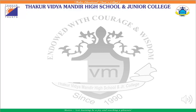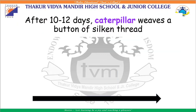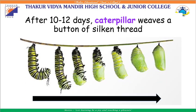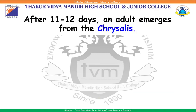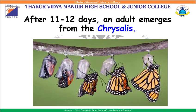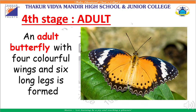Now comes the third stage, and that is the pupa. After ten to twelve days, the caterpillar weaves a button of silken thread and forms a covering called chrysalis or pupa. Growth of the butterfly takes place inside the chrysalis, and after eleven to twelve days, an adult emerges from the chrysalis — that is the fourth stage. In the fourth stage, that is the adult stage, a beautiful butterfly with four colorful wings and six long legs is formed.